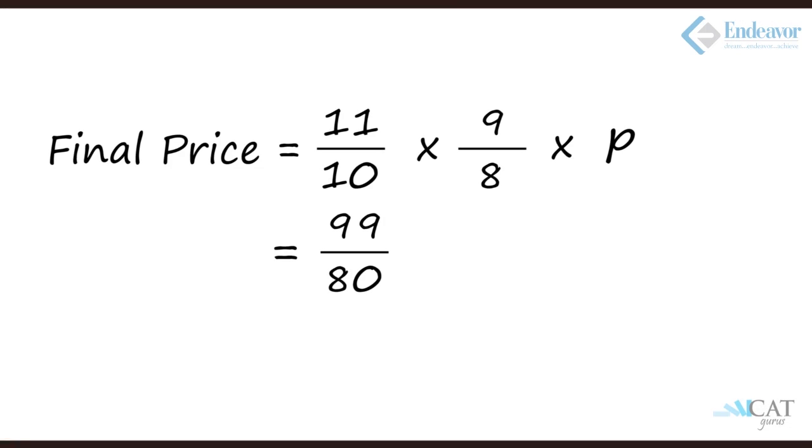Let us look at the numbers. 10% hike. 10% is 1 by 10, so that results in 11 by 10. Then comes 12.5%, which is 1 upon 8, which results in 9 upon 8. So the final price will be nothing but 11 by 10 into 9 by 8 into the original price, which is 99 upon 80, which is 123.75%. So the increase is 23.75% on the original price.